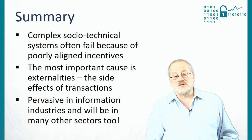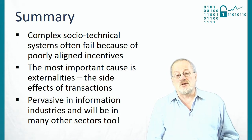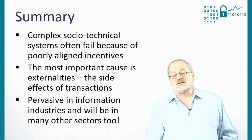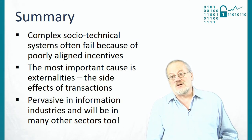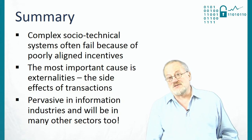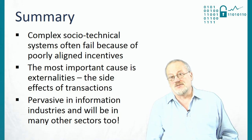In summary, complex socio-technical systems often fail because of poorly aligned incentives. One of the most important causes is externalities — that is, the side effects that transactions have — and very often, network effects. These are particularly pervasive in the information goods and services industries, and they're now spreading everywhere else as well.